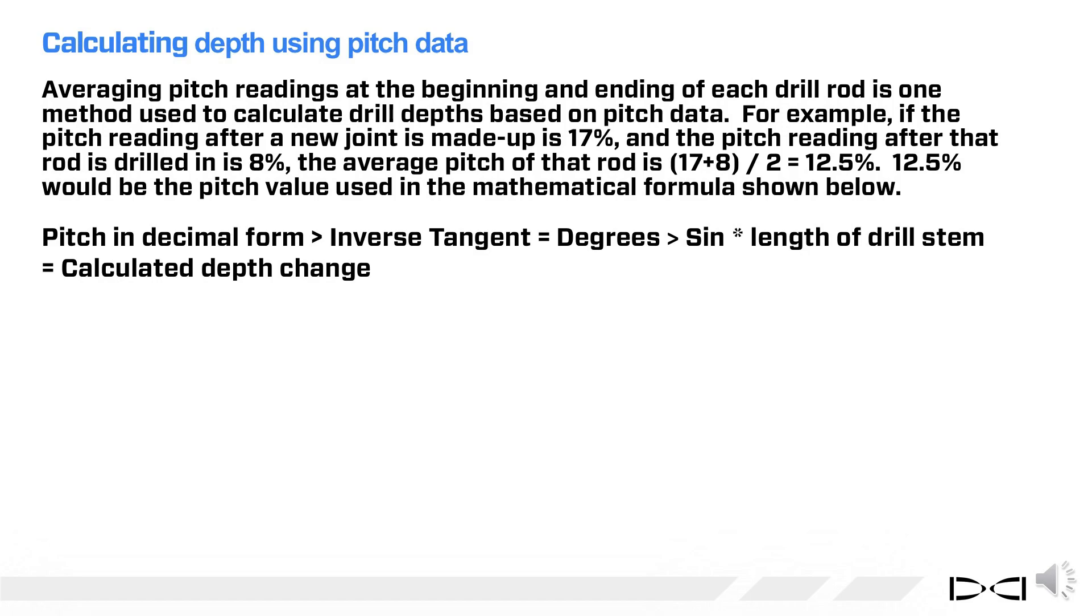The first thing we do is load pitch in decimal form, then you hit the inverse tangent button, converting pitch into degrees. You then hit the sine button, and lastly, multiply by length of drill stem, and that is going to give us our calculated depth change. This formula works for any length of drill stem at any pitch value.